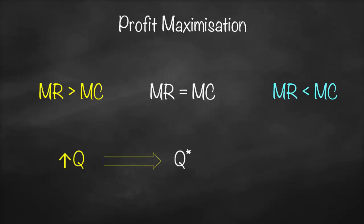In the last scenario, if marginal revenue is lower than marginal cost, it means that producing one more unit generates additional revenue lower than the additional cost. Therefore, it will be better for the firm to decrease the level of production, and we will keep decreasing until we reach the profit-maximizing output Q*, where marginal revenue is equal to marginal cost.